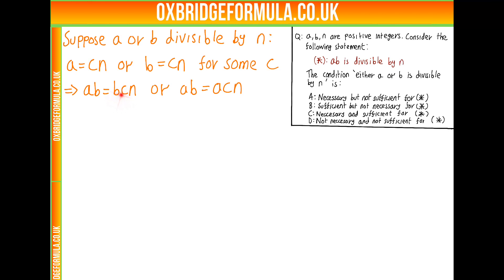Or AB is equal to AC, which is some positive integer, lots of N. So in either case, AB is divisible by N. So we've assumed this case, either A or B is divisible by N, and argued and proved that AB then must be divisible by N. So we certainly have sufficient.